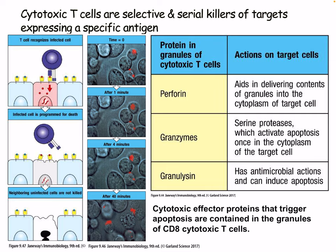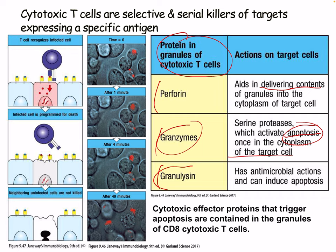Cytotoxic T cells are selective serial killers of targets expressing a specific antigen. CTLs have protein granules containing perforin, granzymes, and granulisin. Perforin aids in delivering contents of granules into the cytoplasm of the target, where granzymes are serine proteases which activate apoptosis. Granzymes, once in the cytoplasm of the target, induce apoptosis. Granulisin has antimicrobial actions and can also induce apoptosis. CD8 T cell effector proteins that trigger apoptosis are contained in these granules.